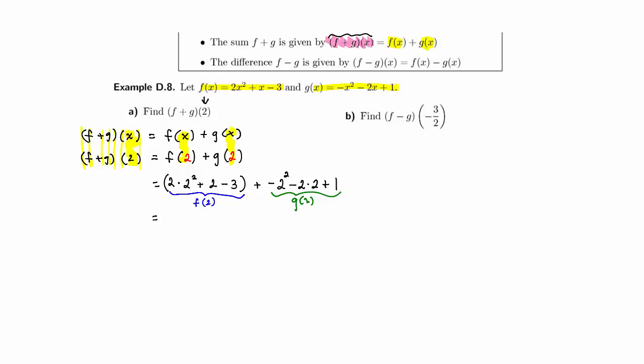And if you don't see it, this is f of 2, and this is g of 2. Just being careful with our operations, 2 times 2 squared, that would be 8, plus 2 minus 3, plus, now be careful here, 2 squared is 4, and 4 times a negative would be negative 4, minus 4 plus 1.